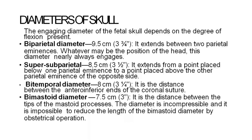The subparietal diameter extends from a point placed below one parietal eminence to the point placed above the other parietal eminence on the opposite side. Bitemporal diameter is the distance between the anteroinferior ends of the coronal suture. Bimastoid diameter is the distance between the tips of the mastoid process. This diameter is incompressible and it is impossible to reduce the length of the bimastoid diameter by any obstetric operation.